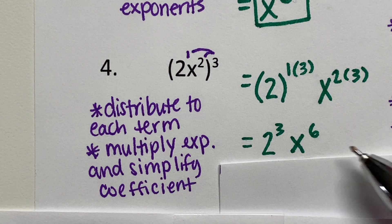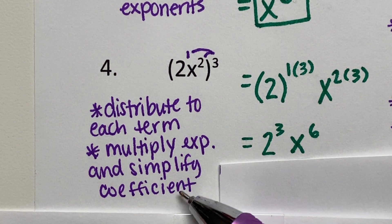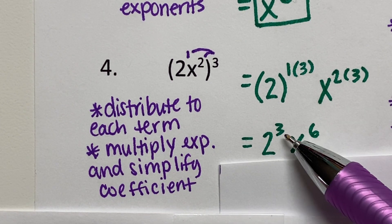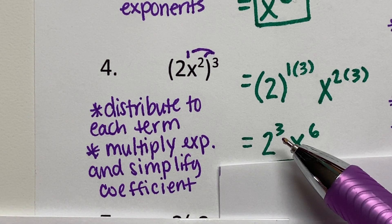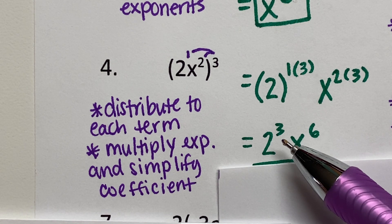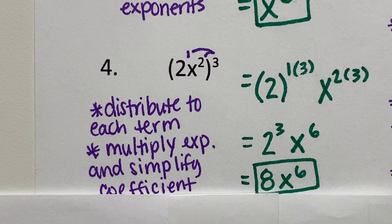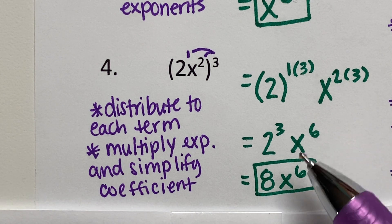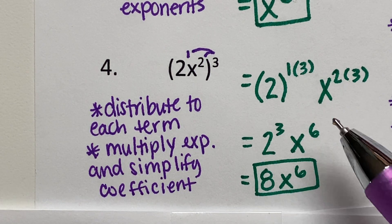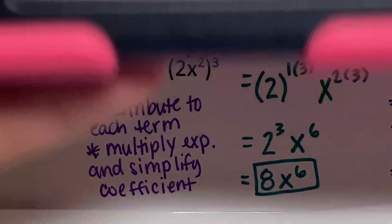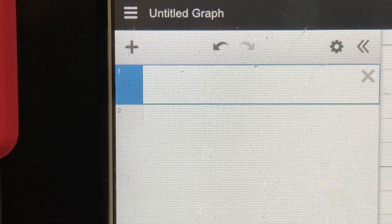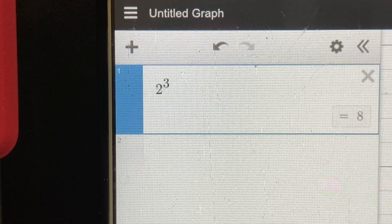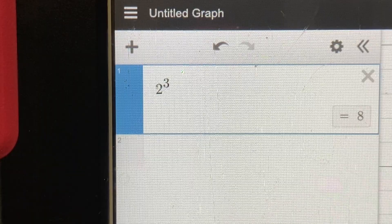This is not our final answer — we need to simplify the coefficient. The coefficient here is two to the third power, which means two times two times two. Two times two is four, four times two is eight. So the answer is 8x to the sixth power. The coefficient is the only term you can put into the calculator — if you put two exponent three, it simplifies to eight.